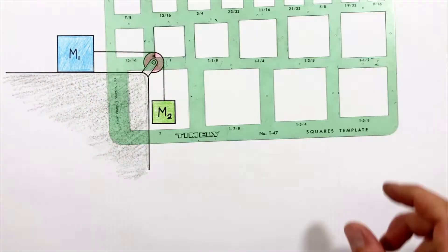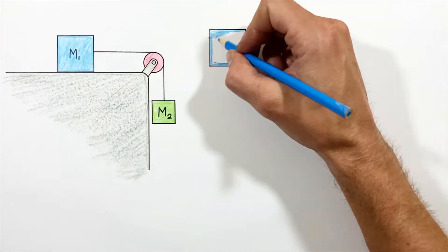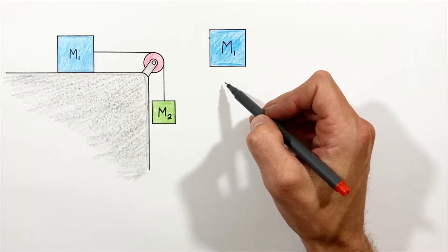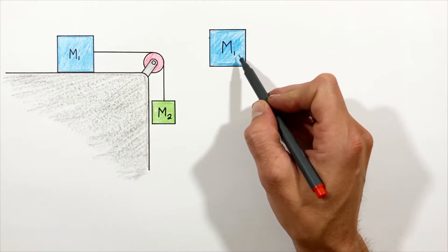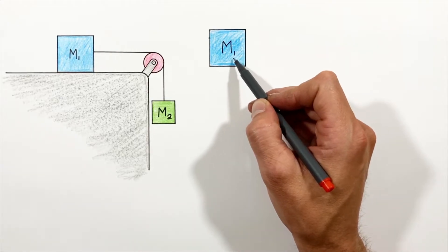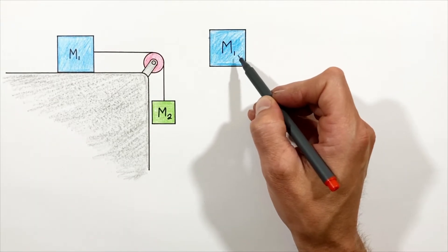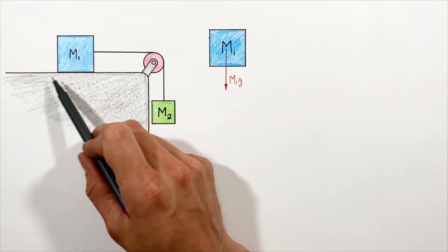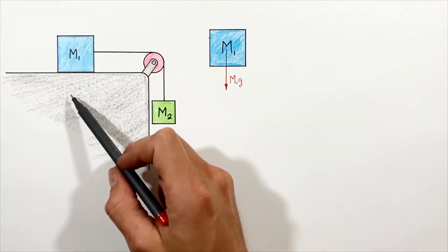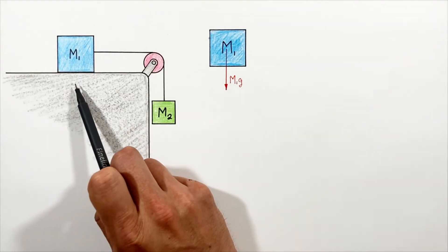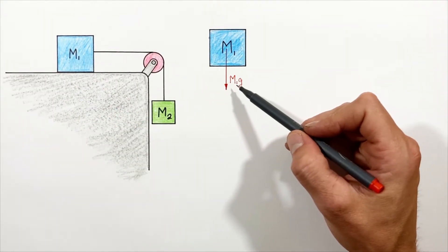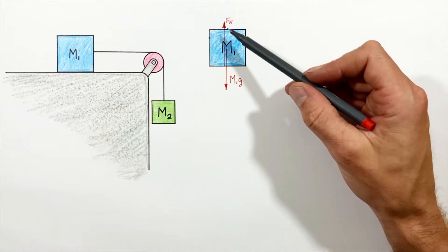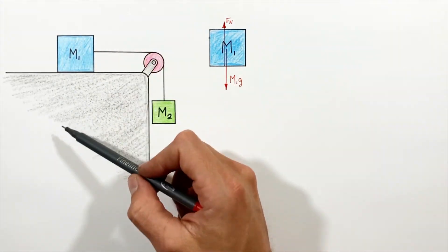Starting with the block on the table, there are three forces acting on it. The first force is gravity acting downward. Because this block has some mass m1, the force downward by gravity is simply m1 times g, or m1g. Because this block is sitting on a level surface and is not accelerating vertically, the normal force between the table and the block must be equal in magnitude to the gravitational force — they cancel each other out, otherwise the block would accelerate vertically.